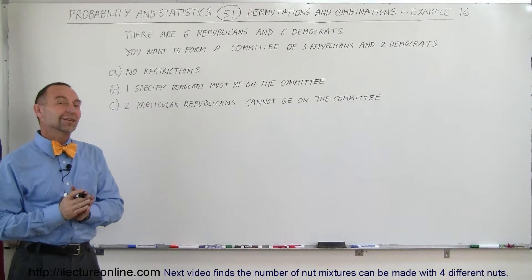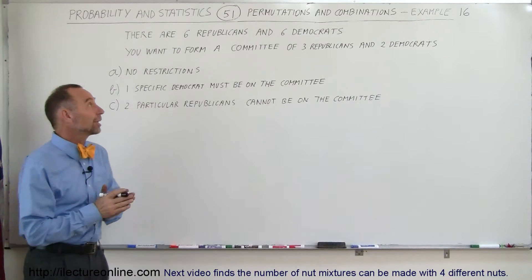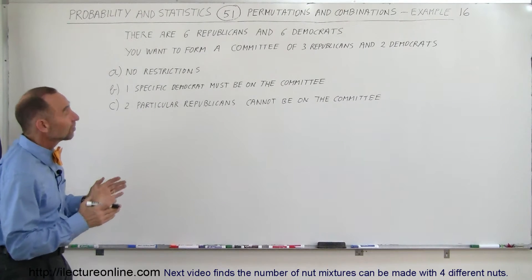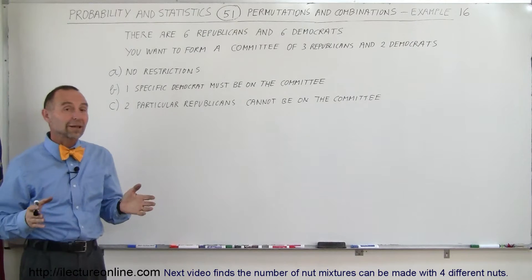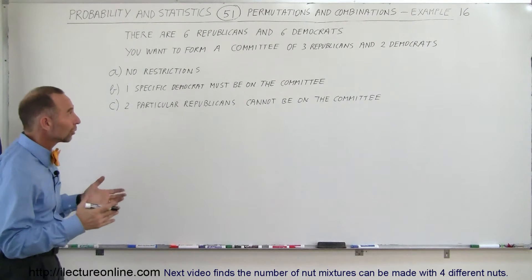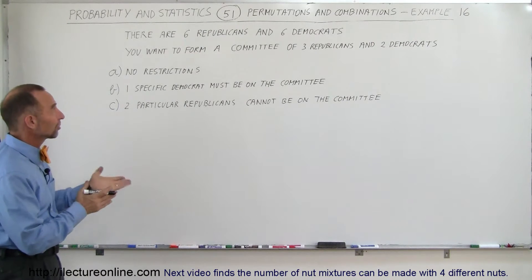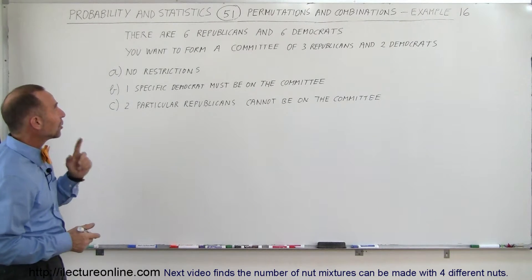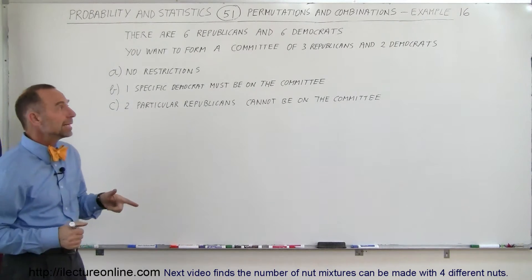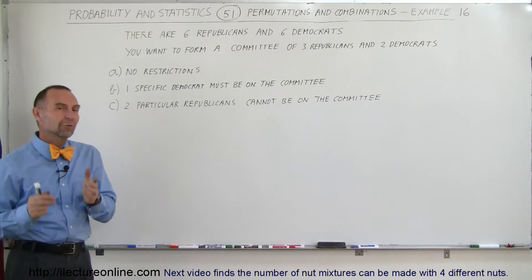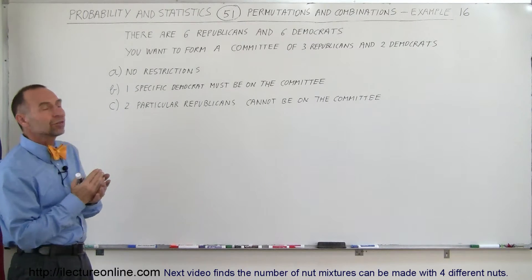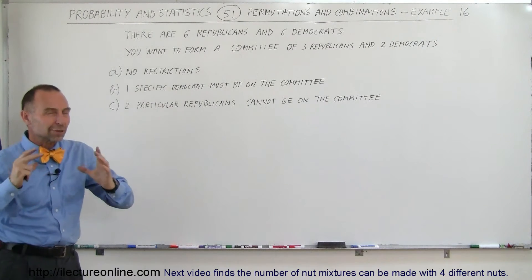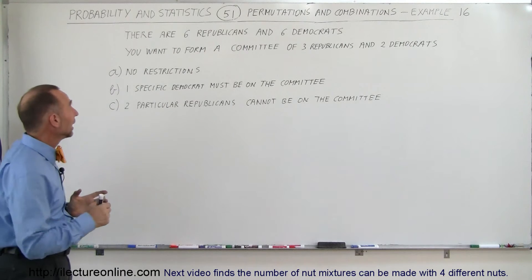Welcome to ElectronLine. In our next example, we're going to deal with six Republicans and six Democrats. We have a total of 12 people — six are Republicans, six are Democrats — and you want to form a committee of which three will be Republicans and two will be Democrats, so a committee of five people.